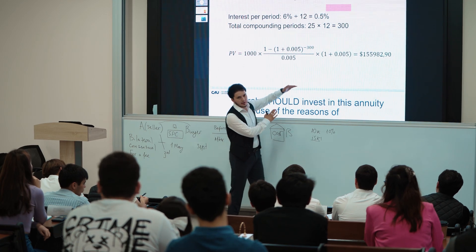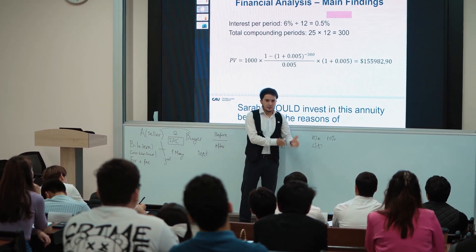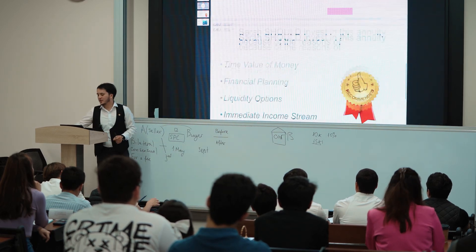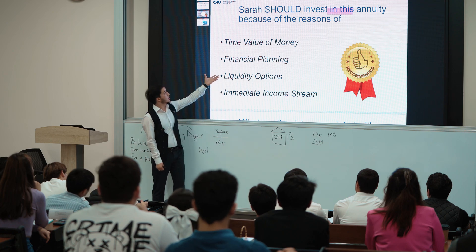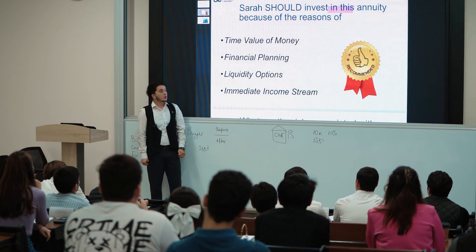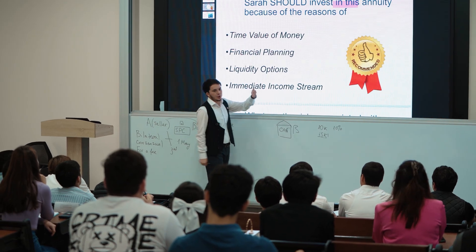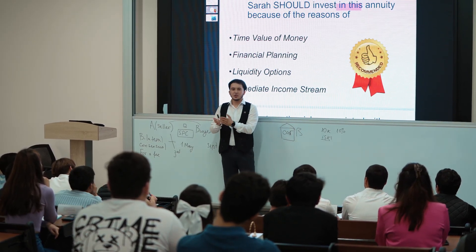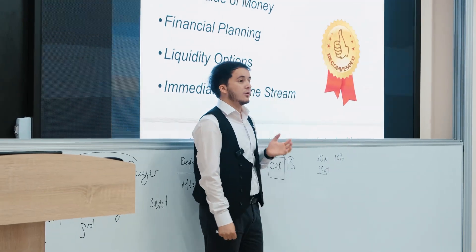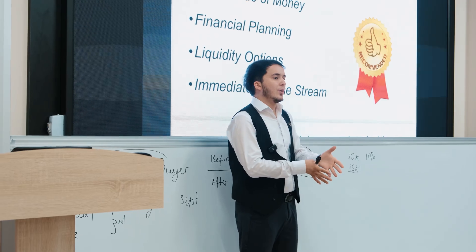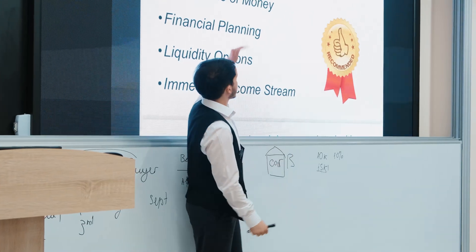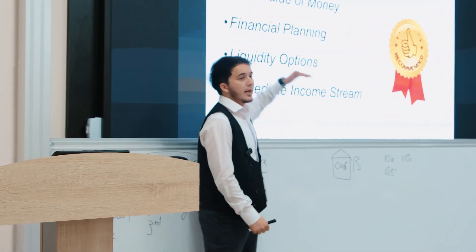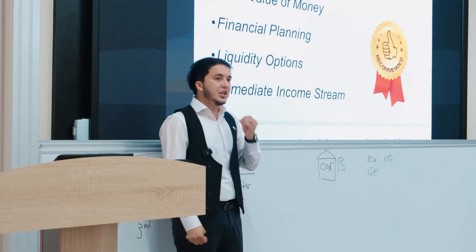The instructor shares arguments in favor of Sarah's investment. First is the time value of money: since this is annuity due and payments are received at the beginning of each period, what Sarah receives now is more valuable than the same amount at the end of the period. Another reason is financial planning — receiving money at the beginning of each month means she can plan ahead and benefit from early payments.